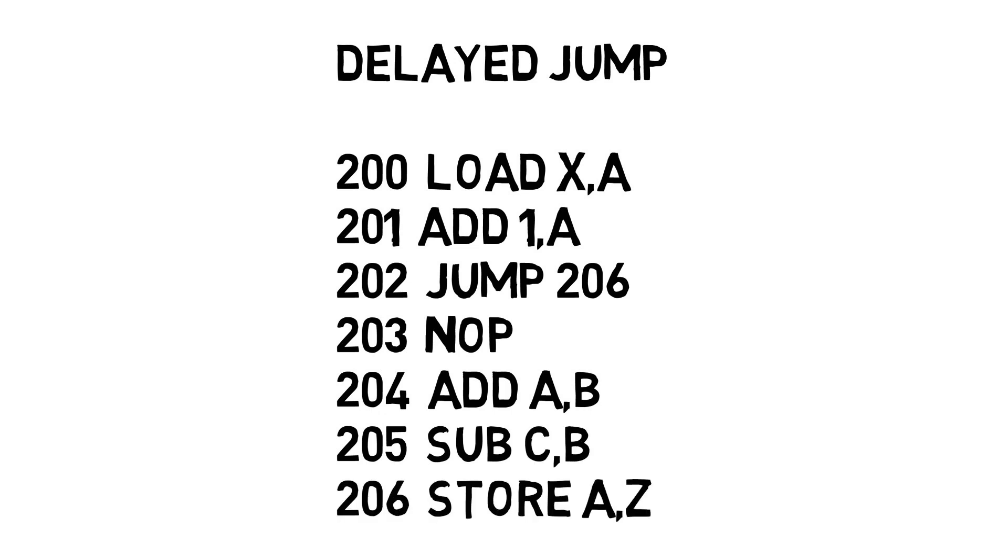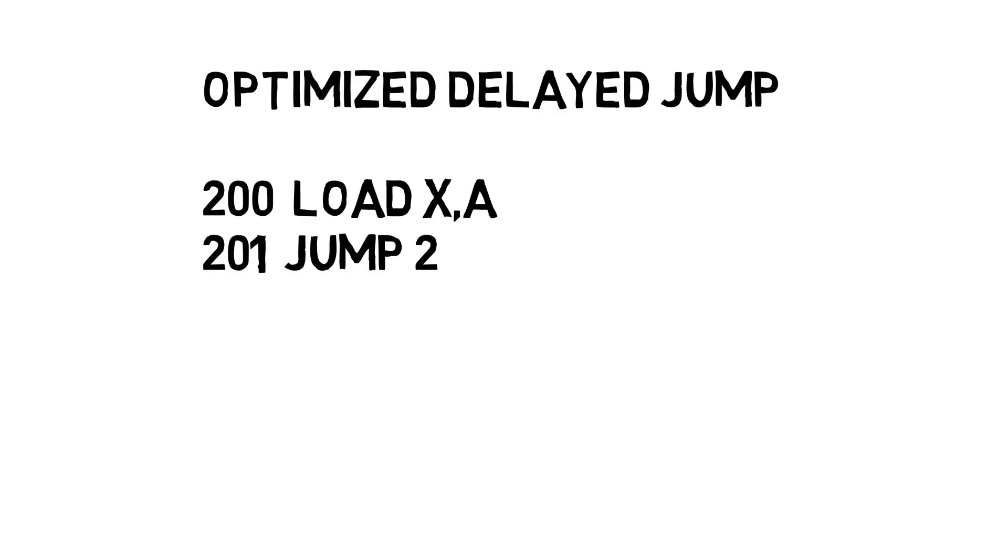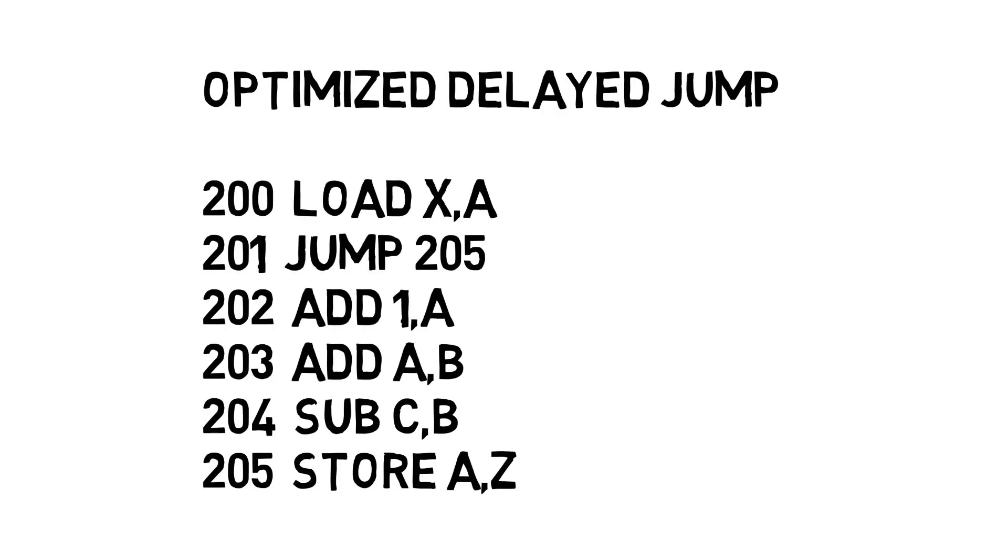To deal with the issue of branching — what happens when the CPU jumps somewhere else — they had the idea of a delayed jump. When a jump instruction was executed, the next instruction was already coming down the pipeline. So after a jump, you'd have a NOP operation which did nothing, so that last instruction already in the pipeline doesn't affect the outcome. They even optimized it: you could write the jump first, then the last instruction you wanted to execute before the jump. Both get pulled into the pipeline, the jump causes a branch, but that last instruction still executes. That's the idea of a delayed jump.